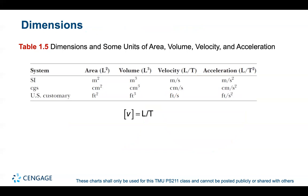In physics, the word 'dimension' denotes the physical nature of a quantity. Distance can be measured in feet, meters, or furlongs — different ways of expressing the dimension of length. The symbols used are L for length, M for mass, and T for time. For example, velocity has dimensions L/T, and area has dimensions L².